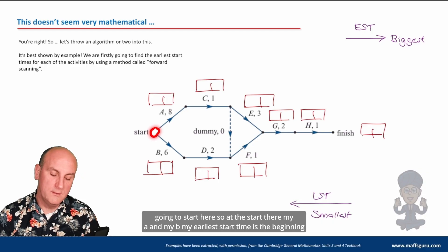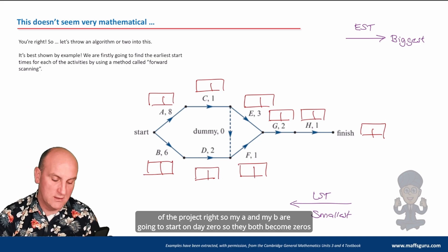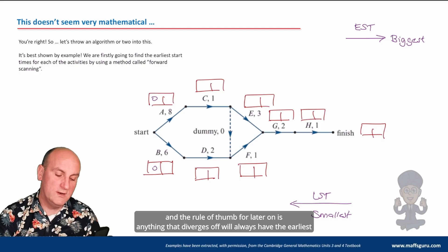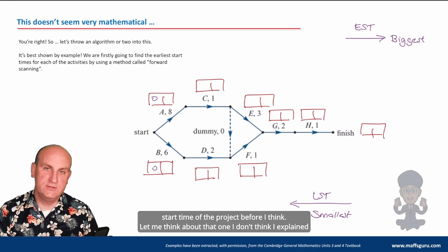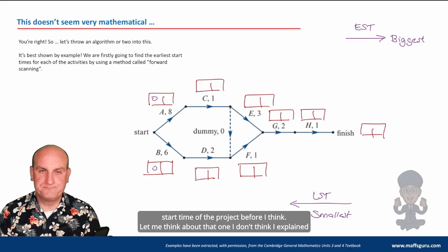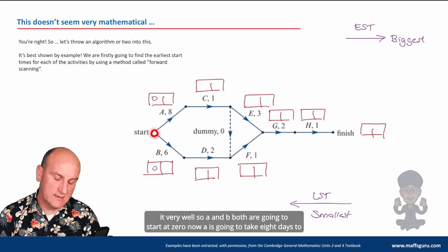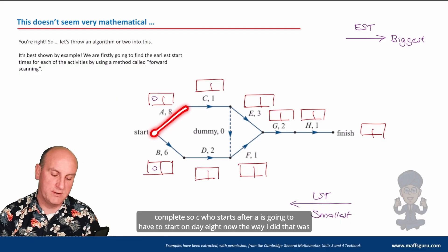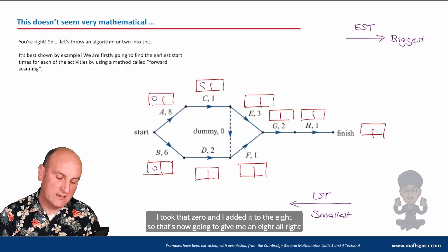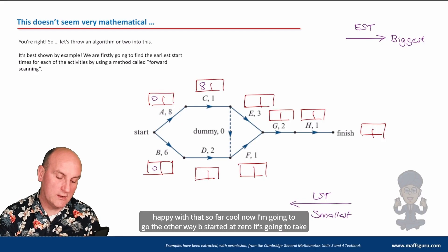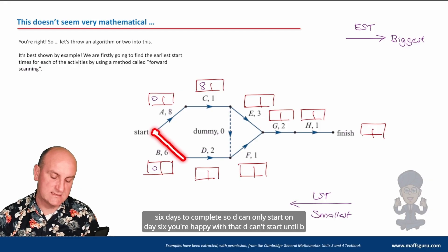So we start here: at the start of the project, A and B both have an earliest start time of day zero. The rule of thumb is that anything diverging off the start node will always have the earliest start time of zero. A and B both start at zero.